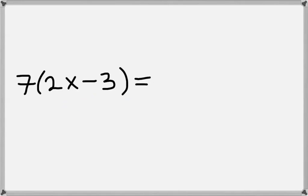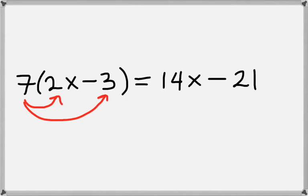Now let's look at 7 times 2x minus 3. So to distribute the 7, we'll take 7 times 2x, which gives us 14x. And then we will take 7 times negative 3, which gives us minus 21.